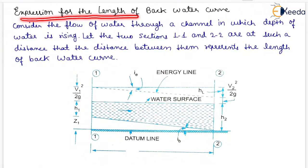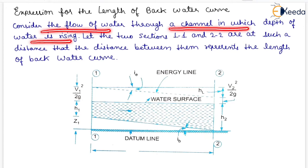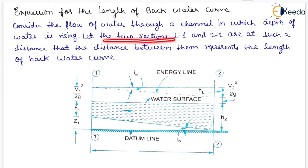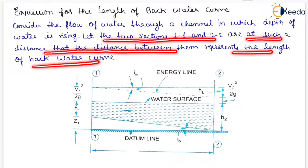Now, expression for the length of backwater curve. Consider the flow of water through a channel in which depth of water is rising. Let the two sections 1-1 and 2-2 are at such a distance that the distance between them represents the length of backwater curve.